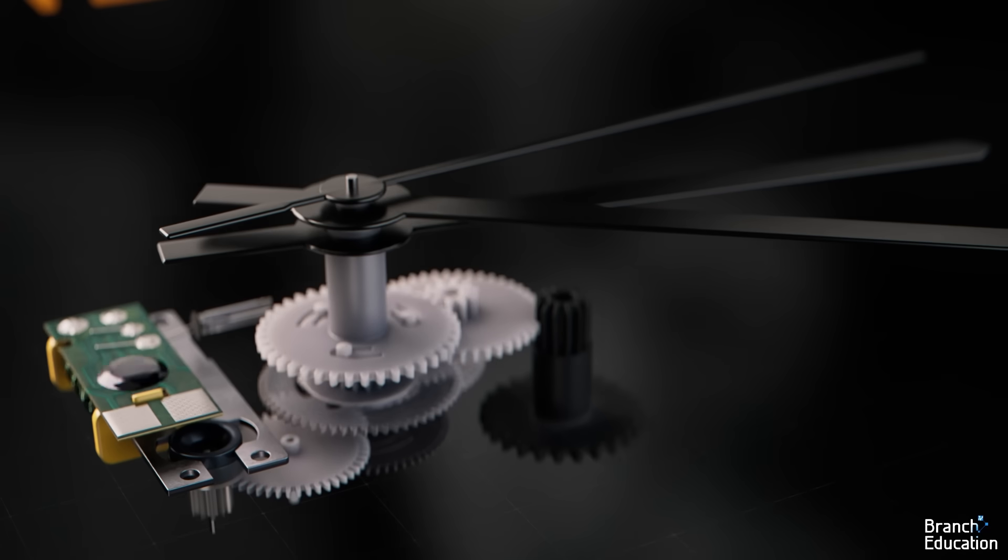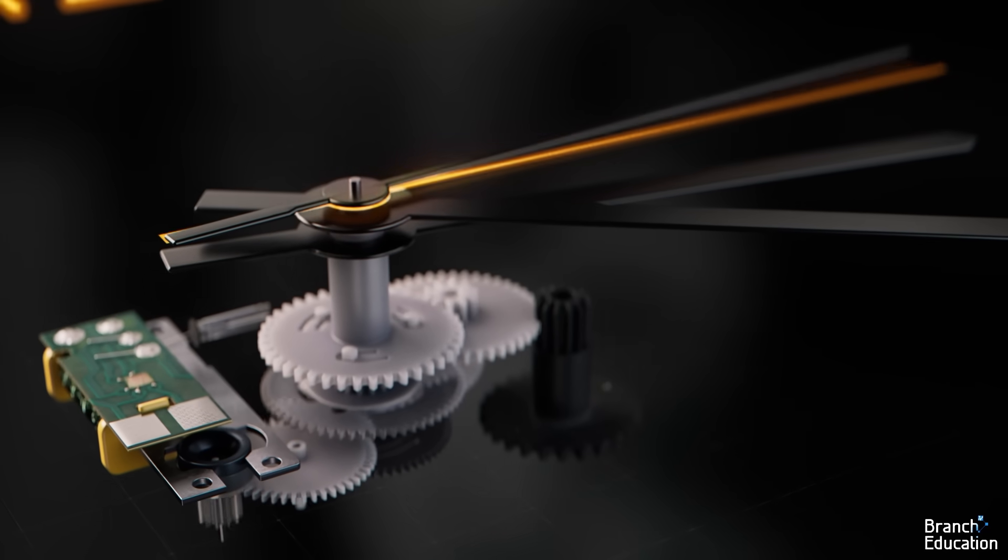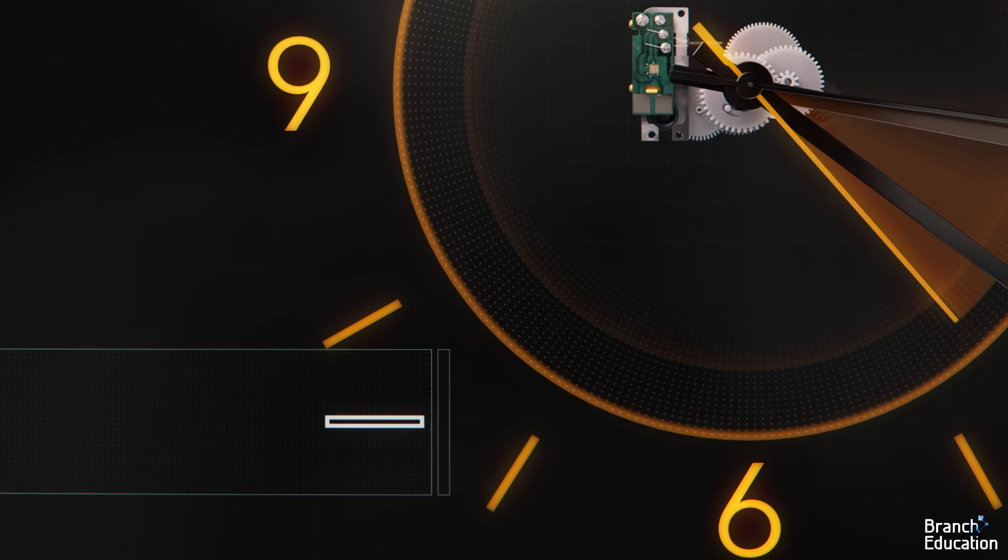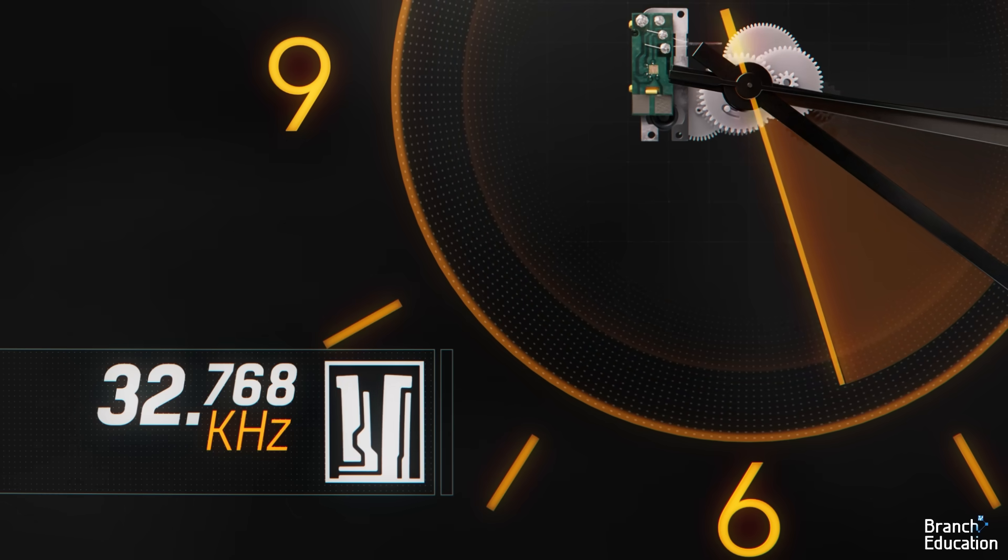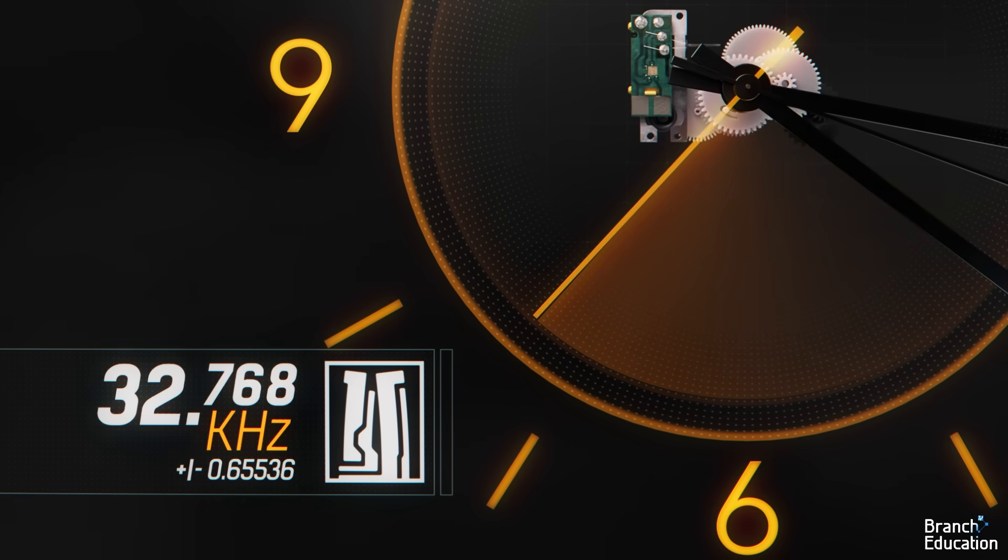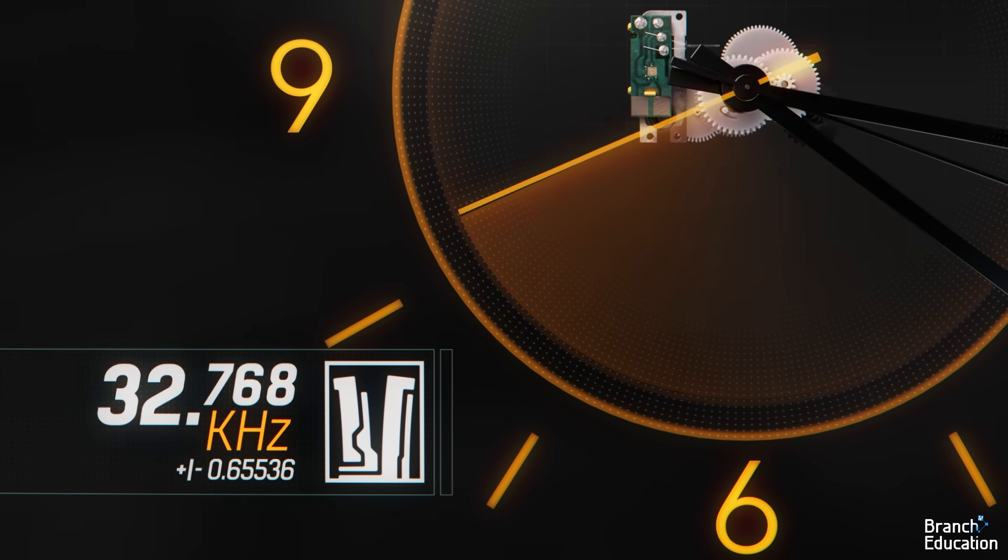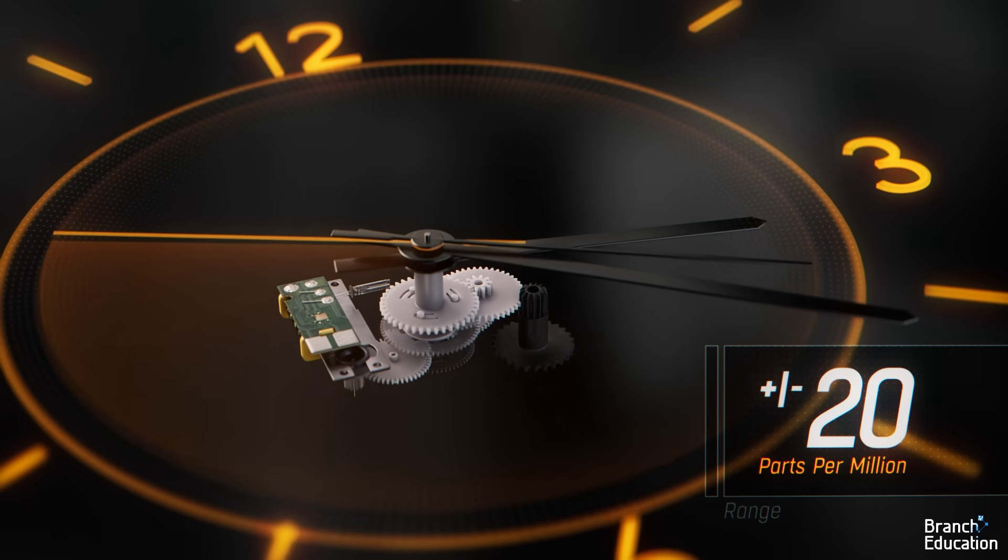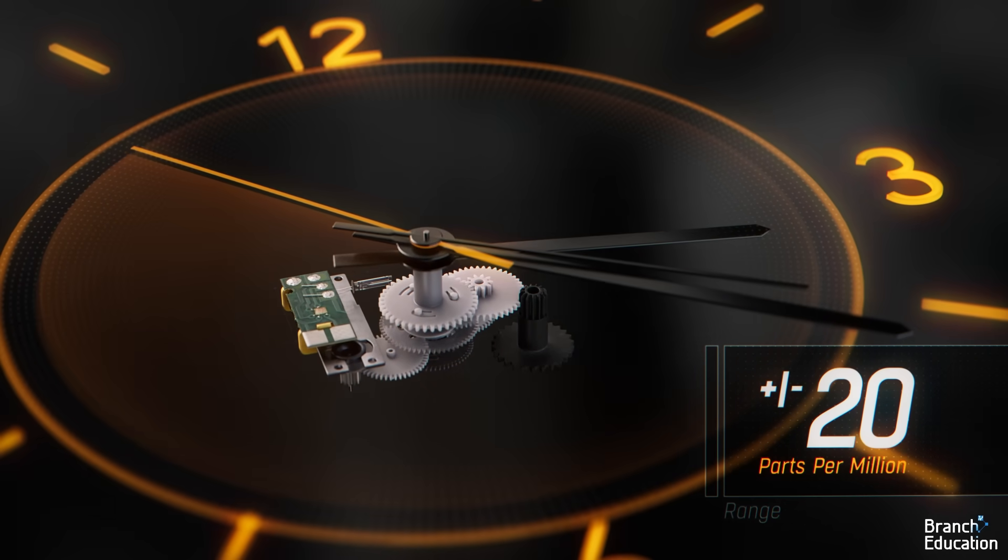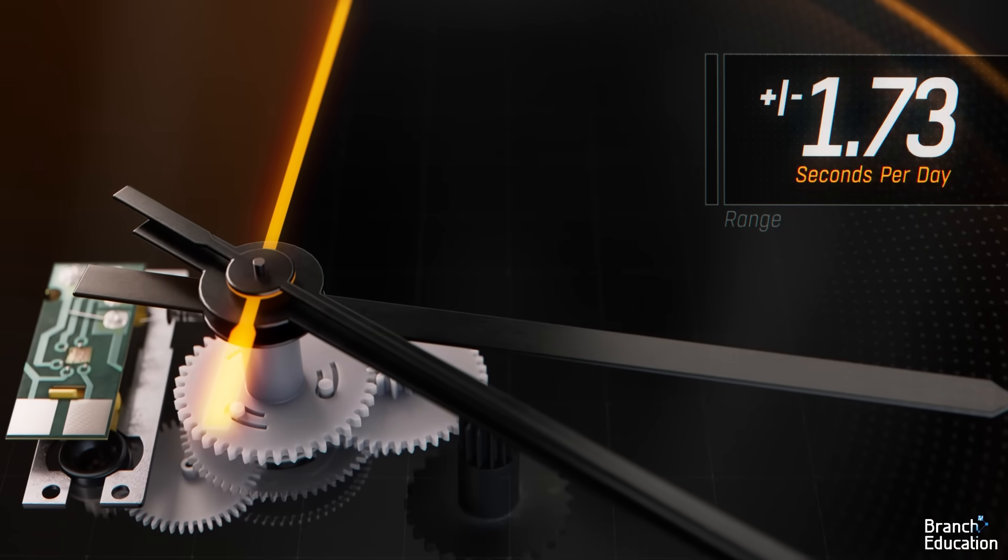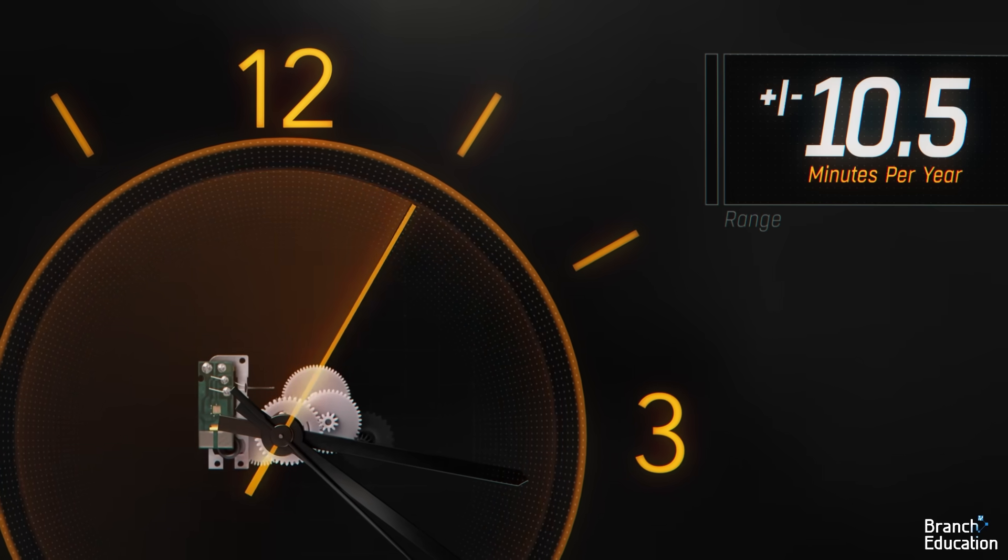One thing to note is that if your clock is either fast or slow, it's most likely because the crystal oscillator doesn't oscillate exactly at 32.768 kilohertz due to the geometry and incorrect resonant frequency of tines. These crystals typically have 20 parts per million accuracies, meaning it can gain or lose at most 1.7 seconds a day or 10 and a half minutes a year.